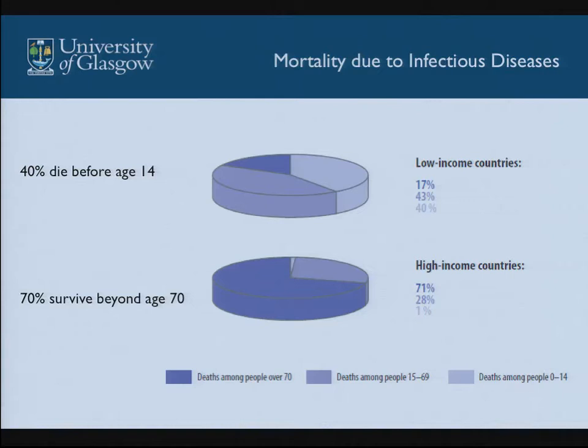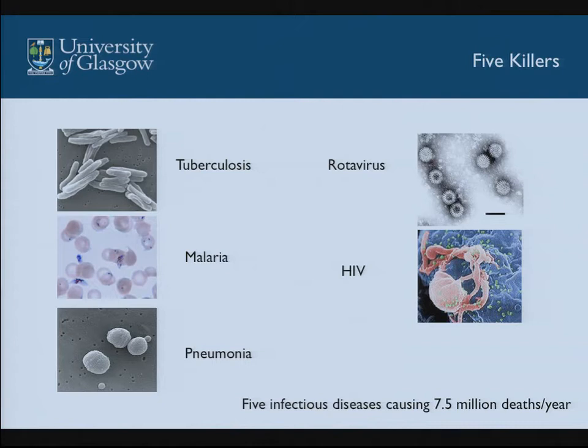The figures are quite stark: 40% of people die before the age of 14 in low-income countries, whereas 70% of us will survive beyond 70, with perhaps only 1% of children dying before 14. Most of these deaths in the developing world come from five major diseases: tuberculosis, malaria, pneumonia, rotavirus — associated with dysentery and poor water control — and HIV, which in the developing world kills many people.